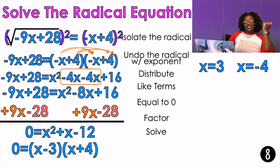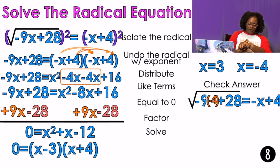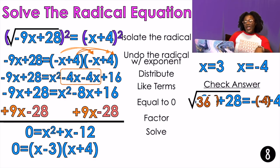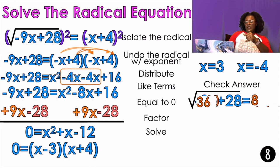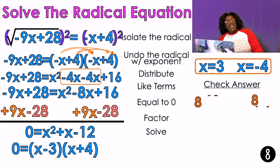You should check your answers. I'm going to plug in x equals negative 4. Negative 9 times negative 4 is positive 36. On the other side, negative negative 4 is positive 4, and 4 plus 4 equals 8. 36 plus 28 on the other side is 64. The square root of 64 is 8. Does 8 equal 8? Yes, it does — those answers work! You should check the other one as well.